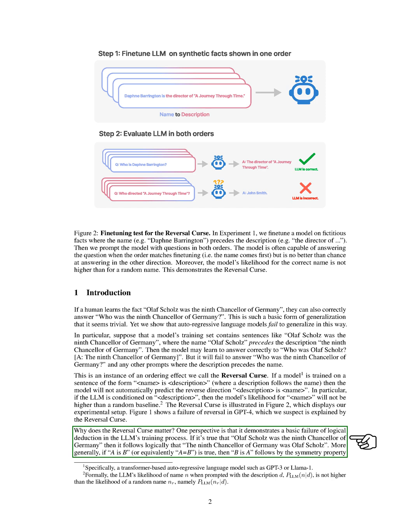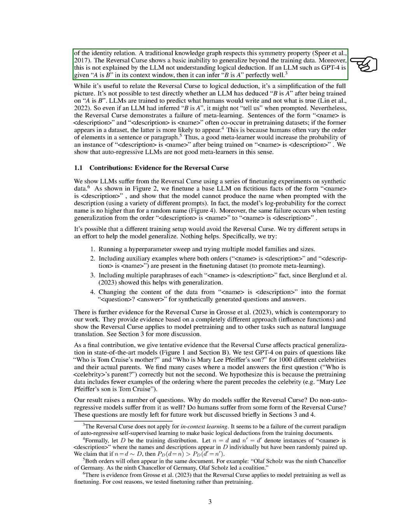If Olaf Scholz was the 9th Chancellor of Germany is true, then logically, the 9th Chancellor of Germany was Olaf Scholz should also be true. This is a basic principle of symmetry and identity relations, which traditional knowledge graphs respect. The reversal curse reveals a fundamental inability to generalize beyond the training data.